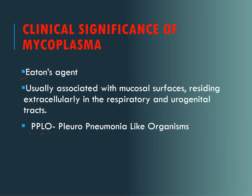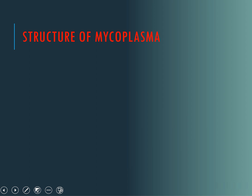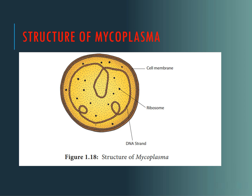Usually these are associated with mucosal surfaces present in the respiratory and urogenital tract. The structure of mycoplasma is simple. They have a cell membrane composed of sterols, they don't have a cell wall, and their nuclear material is simple — a small genome consisting of double-stranded circular DNA. They have ribosomes which are 70S.